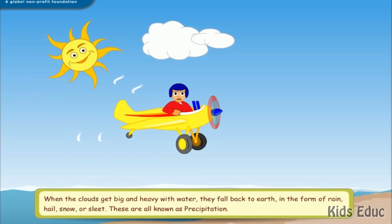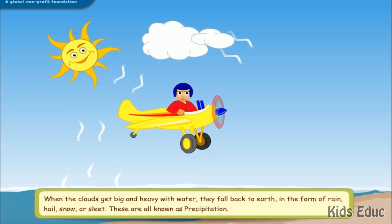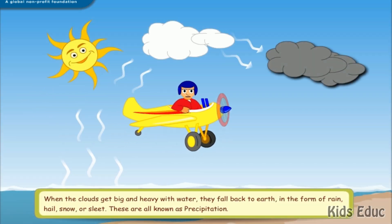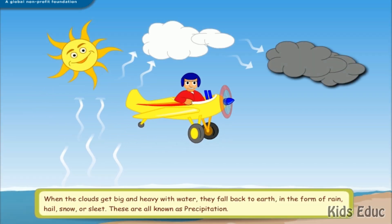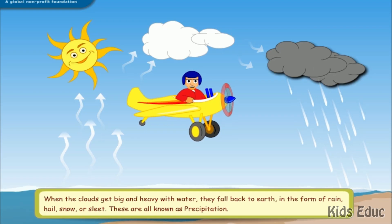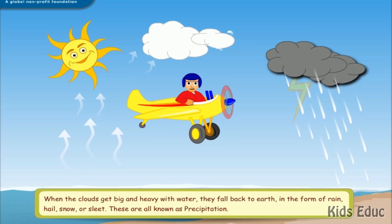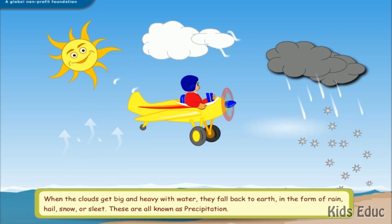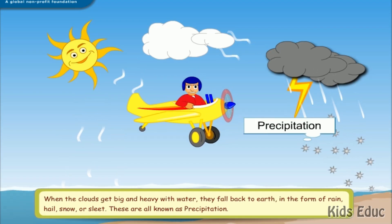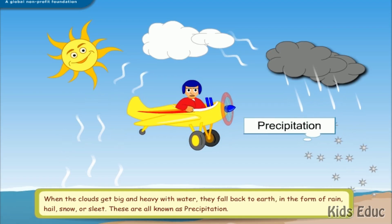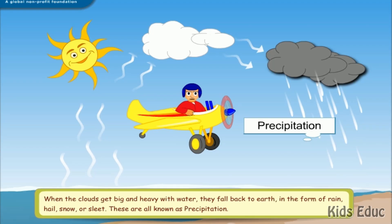When the clouds get big and heavy with water, they fall back to earth in the form of rain, hail, snow, or sleet. These are all known as precipitation.